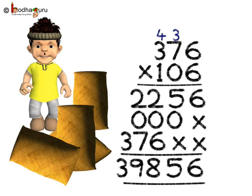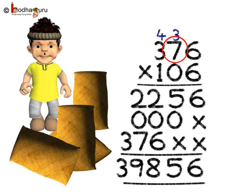Next, we multiply by 0 — that is 376 multiplied by 0. We put a cross sign because we are doing the multiplication at the tens place. 0 times 6 is 0, 0 times 7 is 0, 0 times 3 is 0.